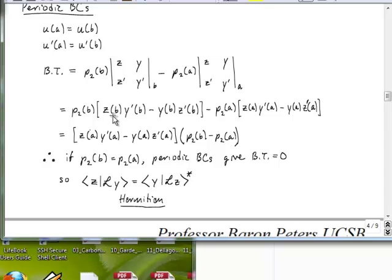Now, what you notice is that this term in square brackets and this term in square brackets are really exactly the same thing because these functions Z and Y must have this property, that their values and derivatives are equal at the two endpoints. So here the only difference is the endpoints, so we can now factor the square bracket term out in front, and we're left with P2 of B minus P2 at A.